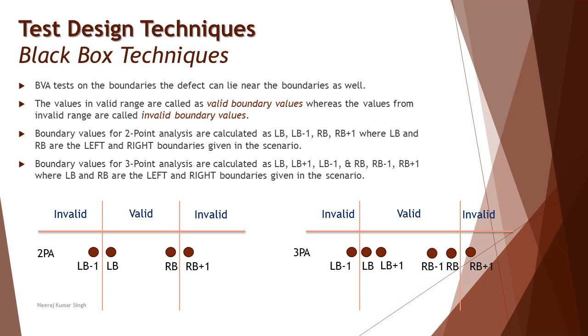There's also a set of formulas which are given to you which can be easy to evaluate the set of values. For 2PA, you can have LB, LB-1, RB, RB+1, where LB and RB are the boundaries of the range provided to you. For example, if I say my valid range is 1 to 10, then 1 is my LB, 10 is my RB, and LB-1 is 0, and RB+1 is 11.